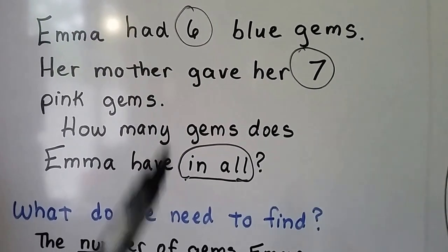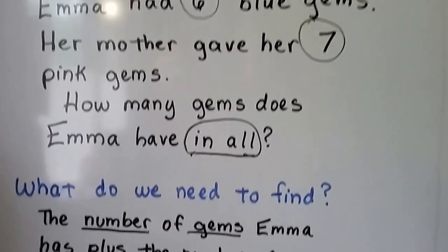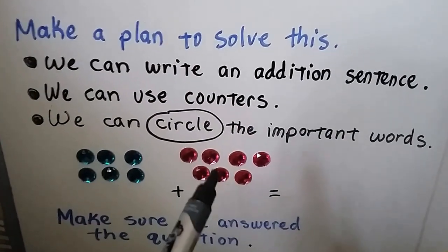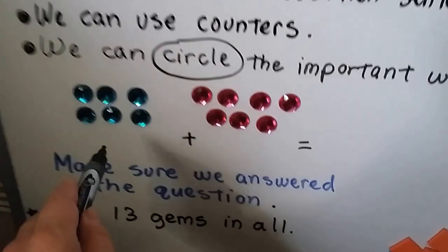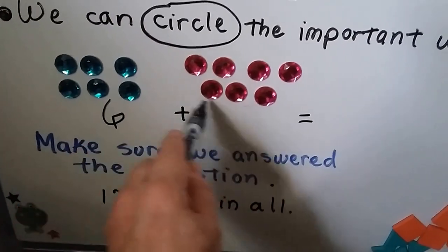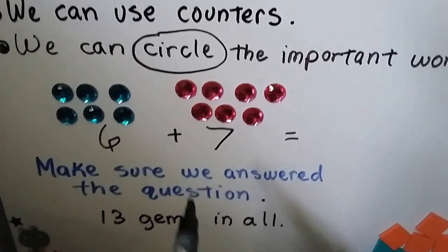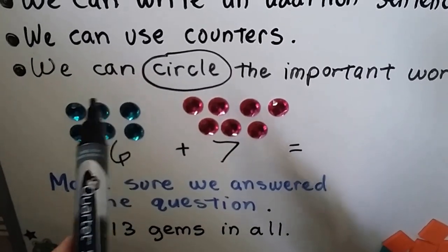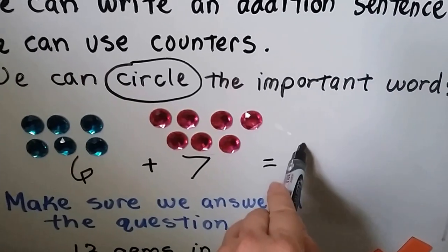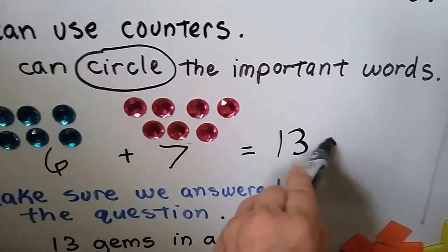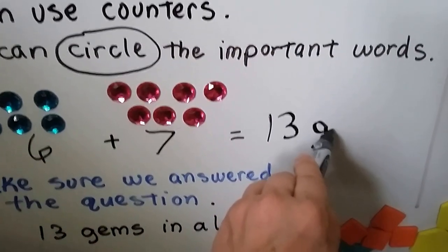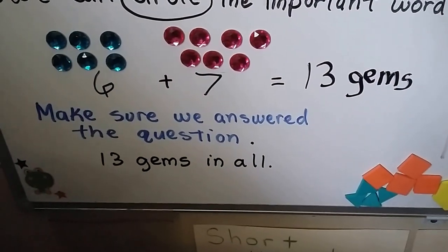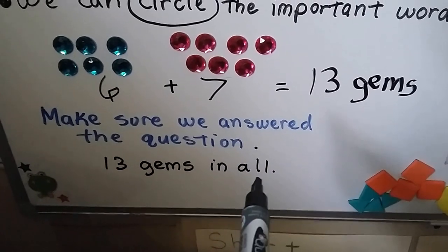Now we know we need to add six and seven. We have six gems and seven gems: six plus seven. We start at the larger number and count on — seven, eight, nine, ten, eleven, twelve, thirteen. Thirteen. And we write 'gems' — we label it. We make sure we answered the question: thirteen gems in all.